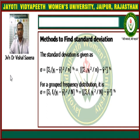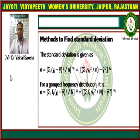For frequency data, the formula becomes sigma equals the square root of summation fi times yi squared upon N minus y-bar squared. Here capital N represents the total number of data, which is summation fi; yi represents the data value; y-bar represents the mean of the data values; and fi represents the frequency of the data.